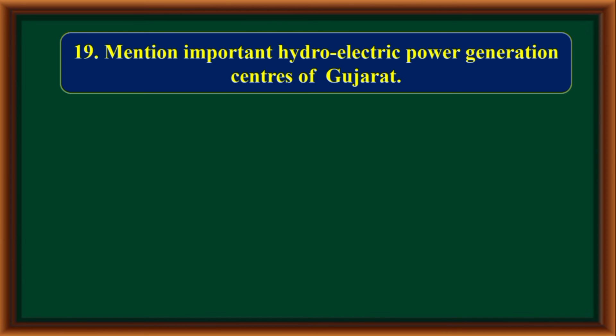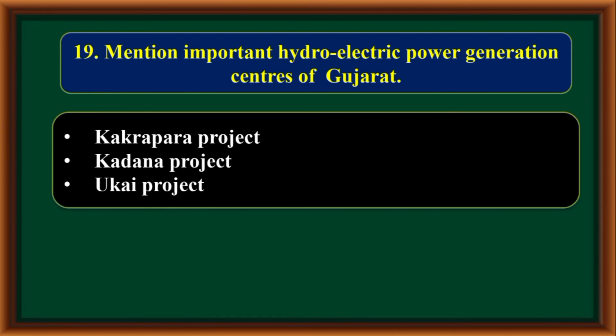Important hydroelectric power generation centers of Gujarat: Kakrapar Project, Kadana Project, and Ukai Project.